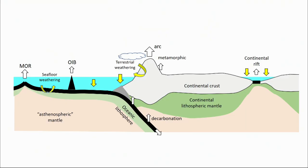You've probably seen many slides like this in this session. It's really all about the inputs and outputs of CO₂ that control how much CO₂ is in the atmosphere. And there's, of course, all the deep mantle contributions, metamorphic degassing, and then you have silicate weathering and the eventual precipitation of carbonate.